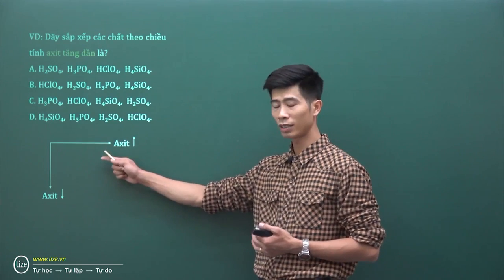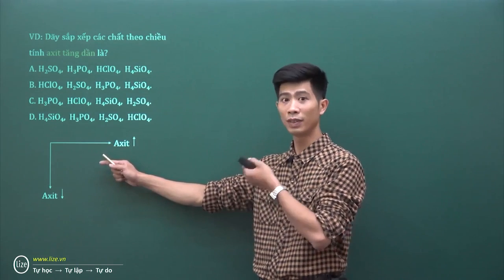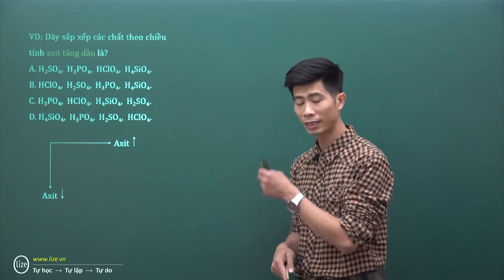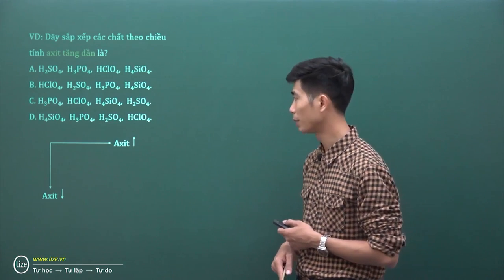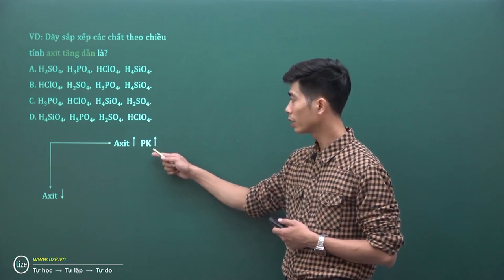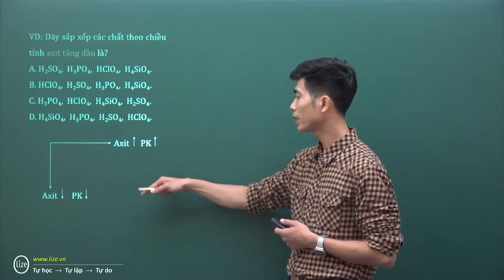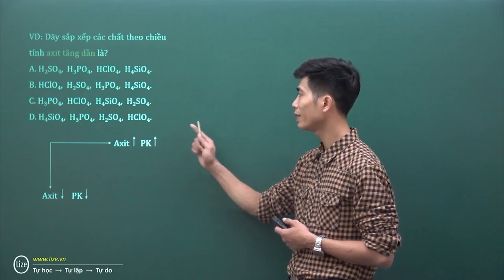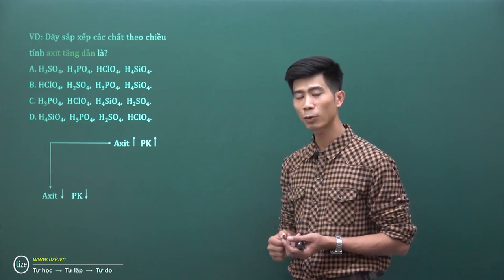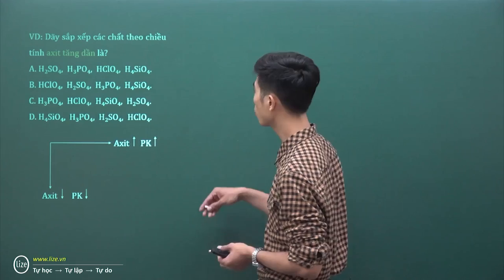Còn tính acid trong một nhóm A đi từ trên xuống dưới thì tính acid giảm đi. Tính acid và tính phi kim tương tự nhau: trong một nhóm tính acid giảm, tính phi kim giảm; trong một chu kỳ tính acid tăng, tính phi kim tăng. Do đó đừng quan tâm đến acid nữa, hãy quan tâm đến các phi kim nằm trong các acid đó.